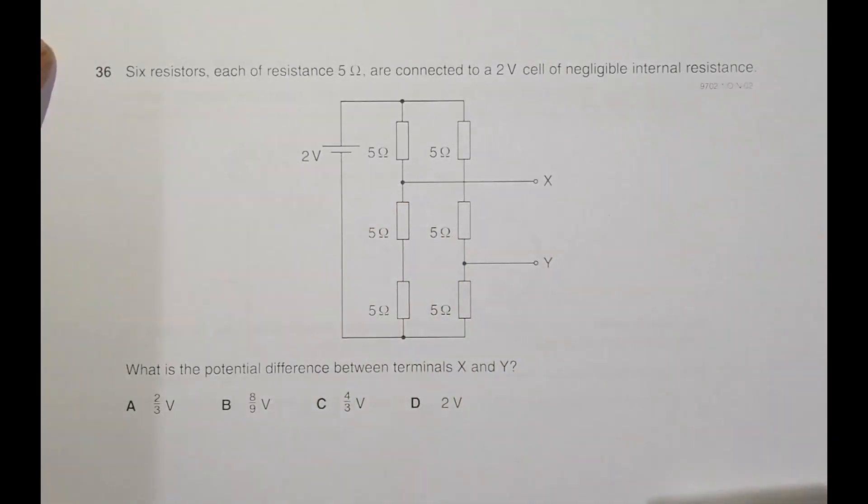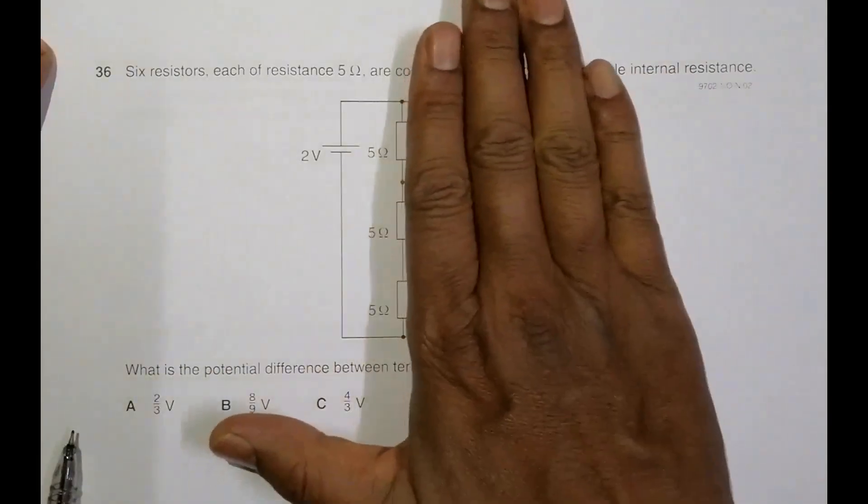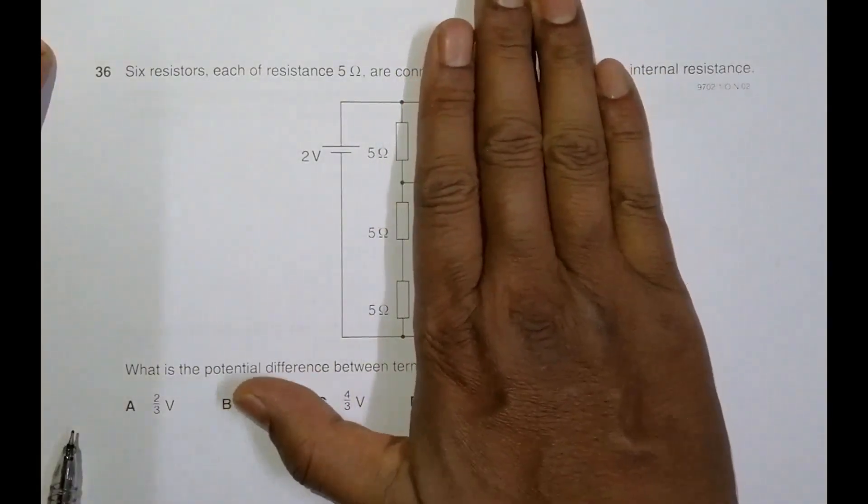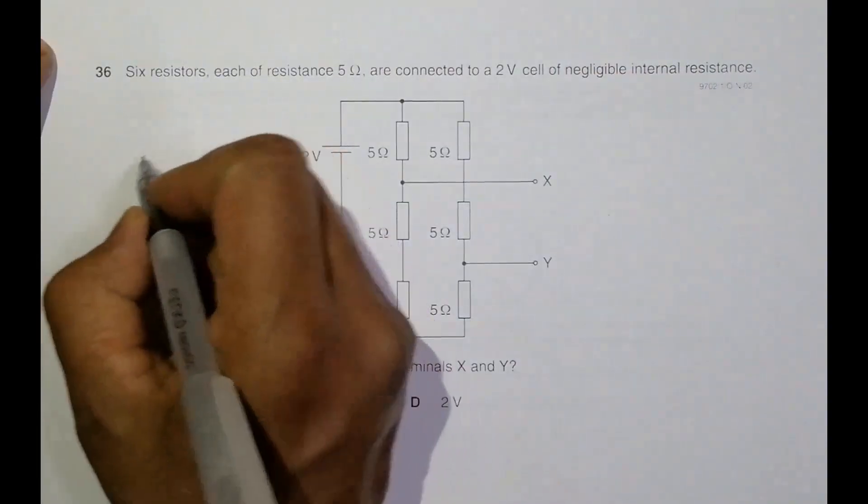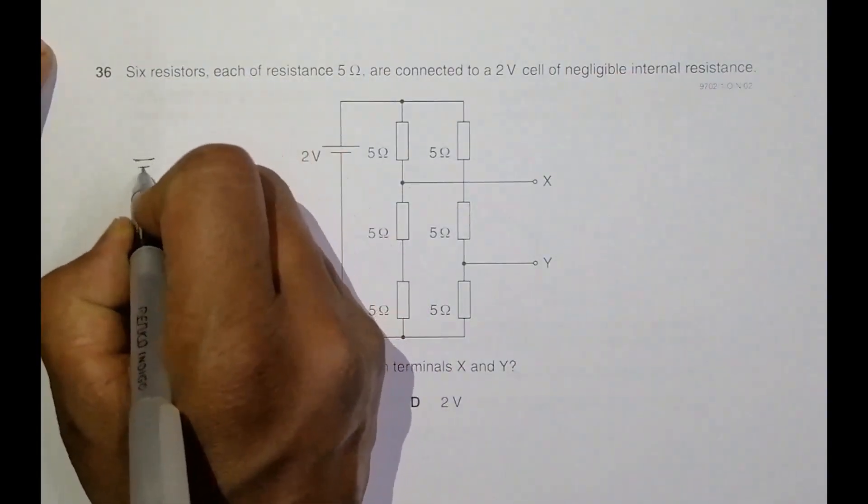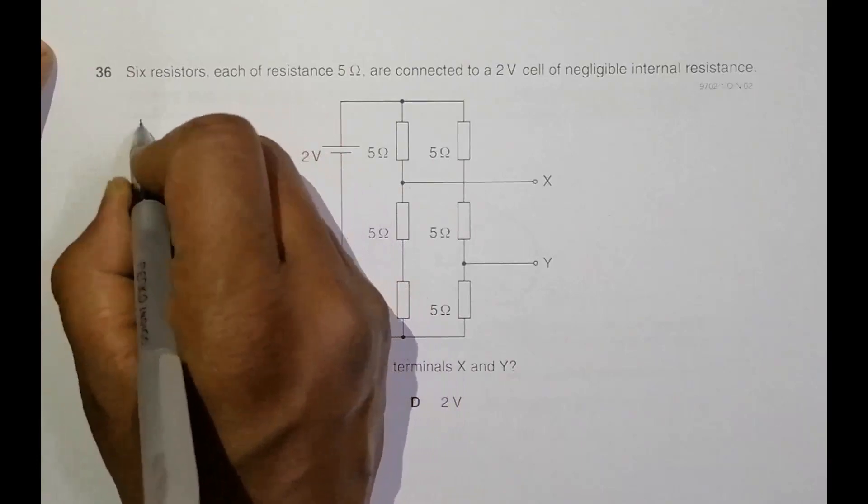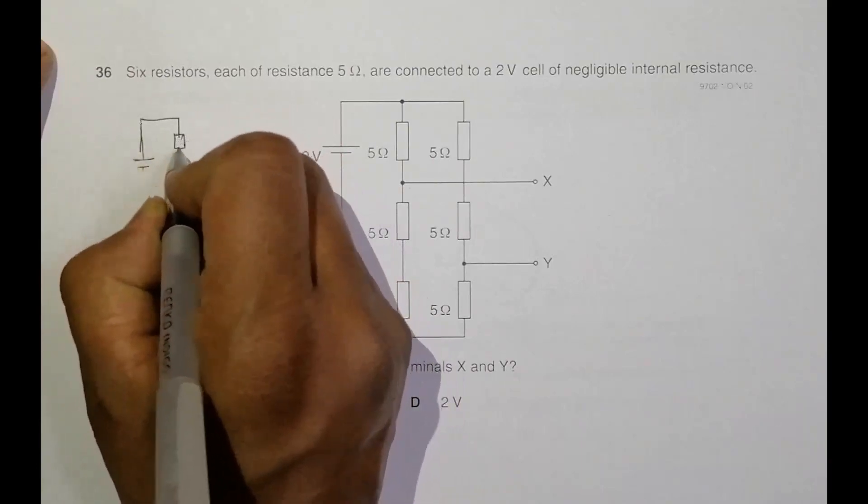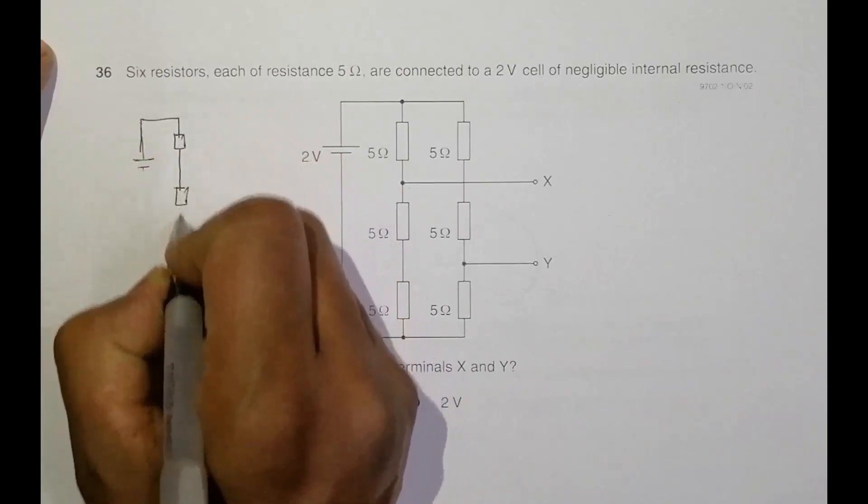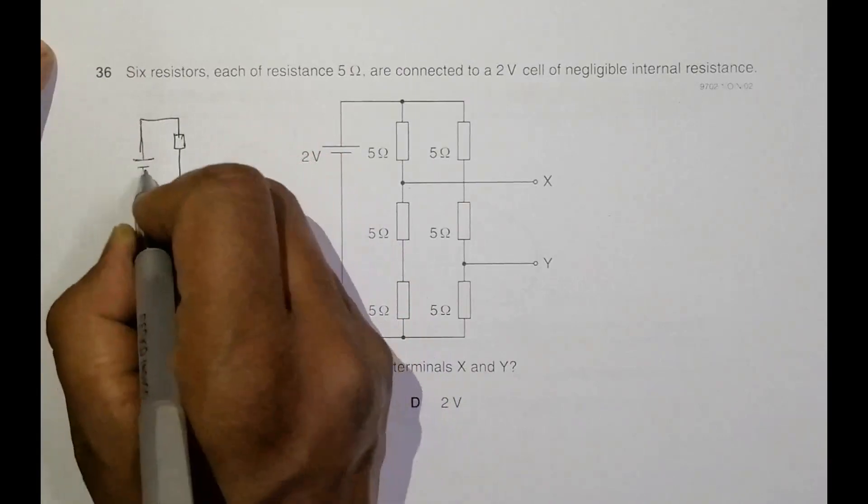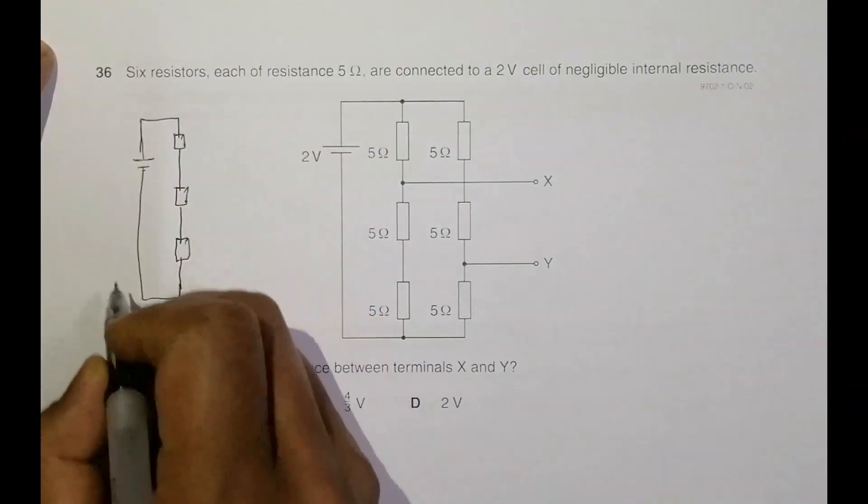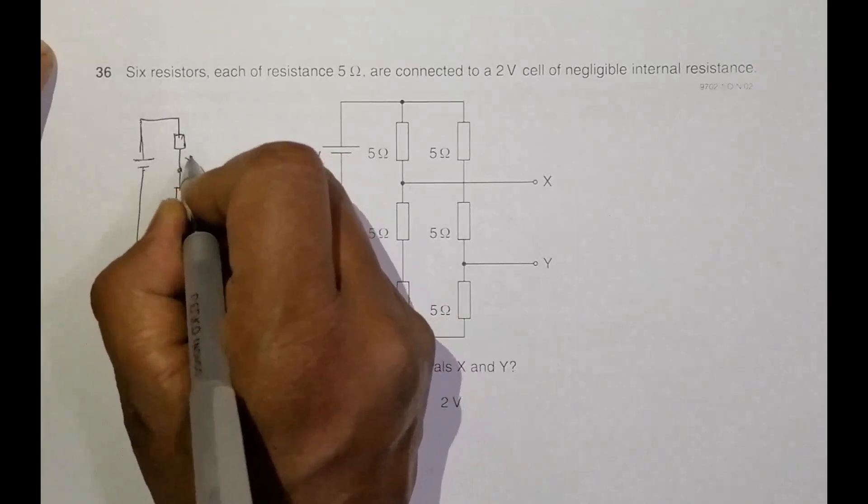So in order to understand that, first we have to break the circuit somewhat like this. So let me consider this part only. If I consider this part only, the circuit is like this. So it is a 2 volt source. Then I have got this here. This is a 5 ohm. This is again 5 ohm. And this is again another 5 ohm. So this is point X.